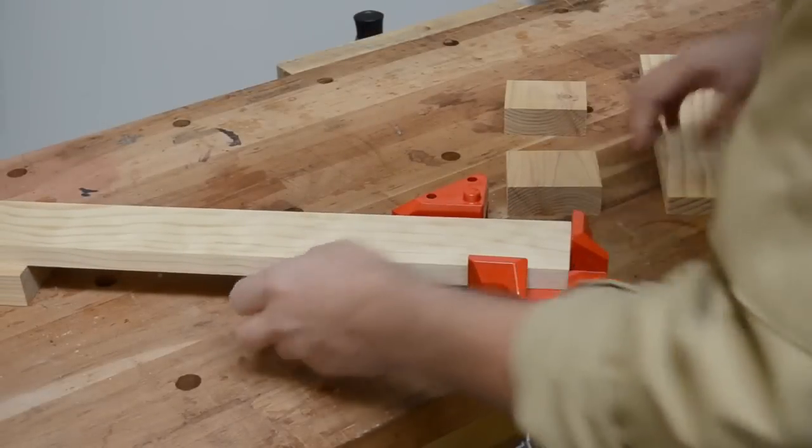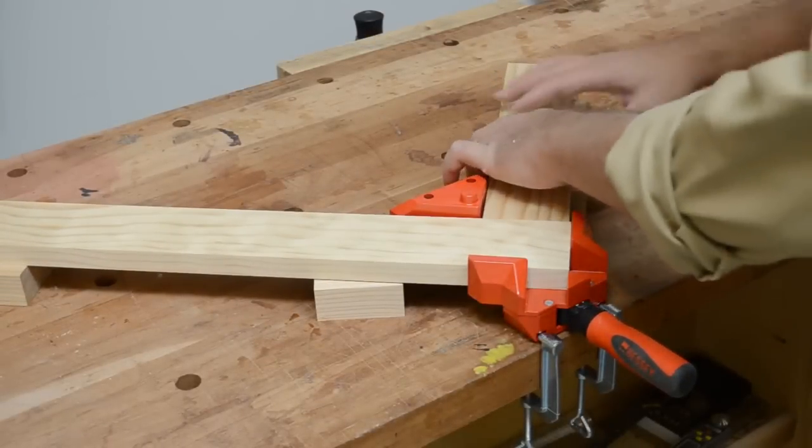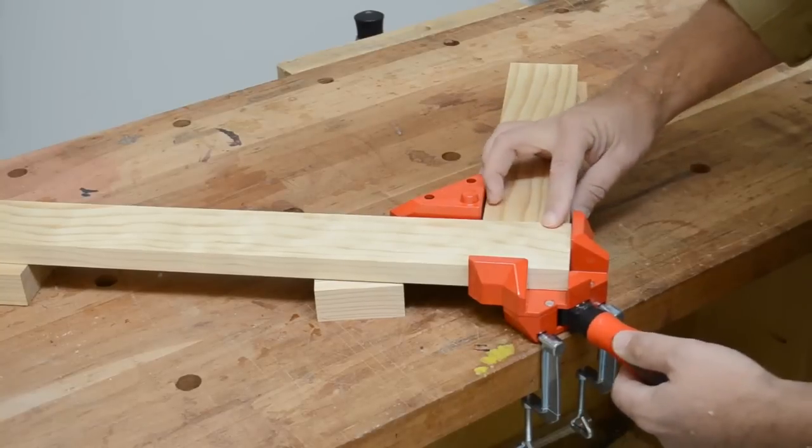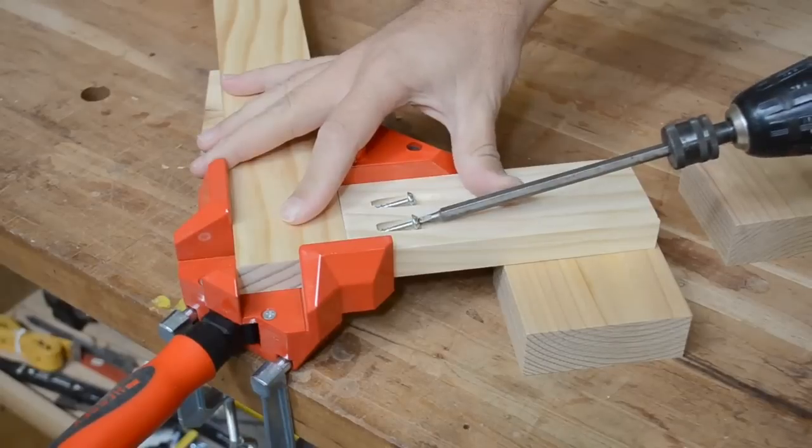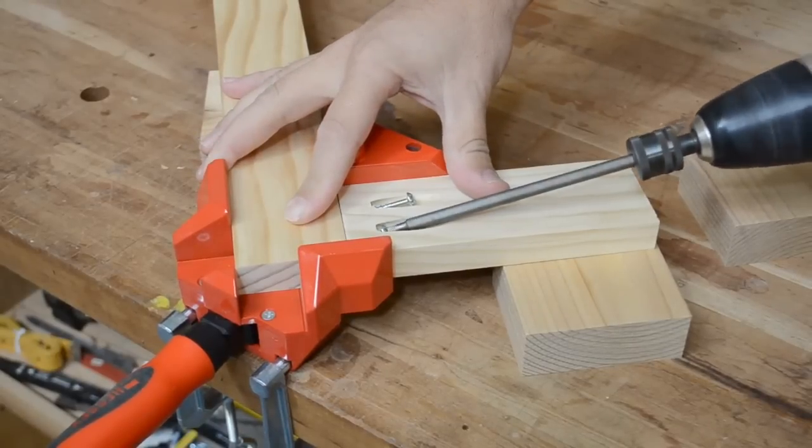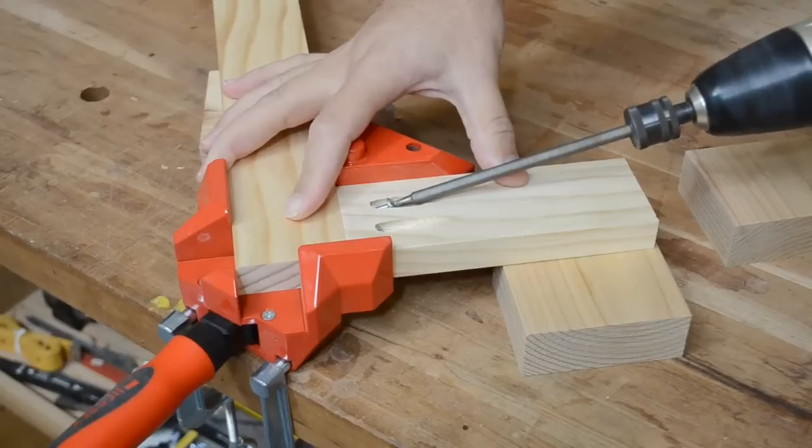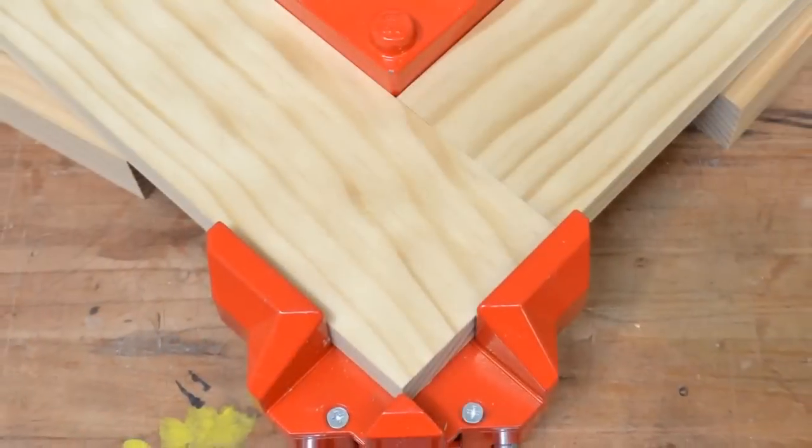While the clamp allows for T-joints up to an inch and an eighth thick, miter and corner joints where the parts don't have to bypass the back side of the clamp can be made with much wider stock, up to two and an eighth inches thick. This is perfect for quick and accurate face frames or similar assemblies.